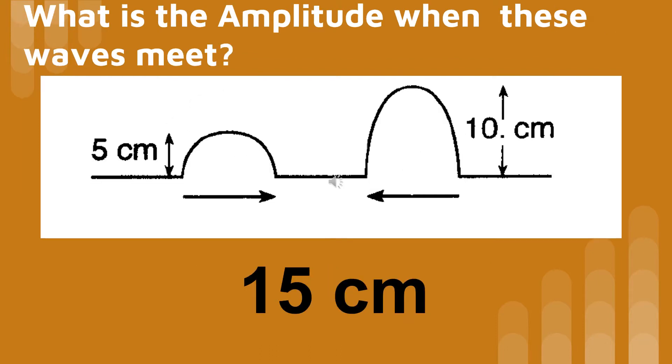Can you predict what amplitude will be produced when these two waves overlap? And what kind of interference is this — constructive or destructive?